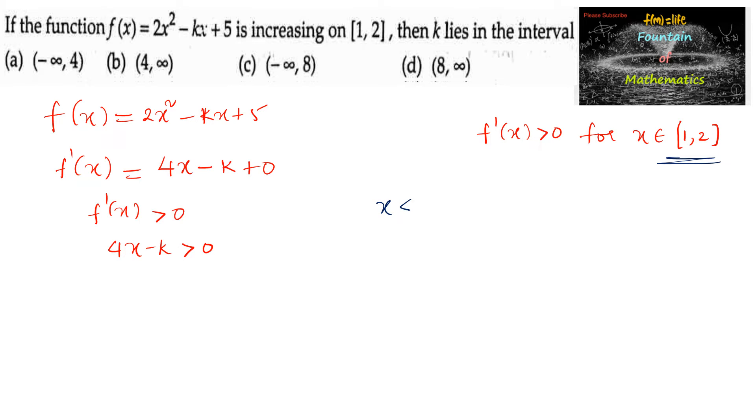When x lies between 1 and 2, 4x lies between 4 and 8, just multiplying by 4. Then 4x - k is less than or equal to 4 - k and 8 - k.